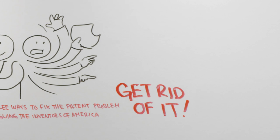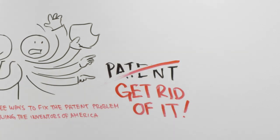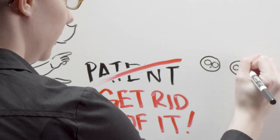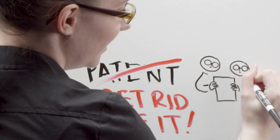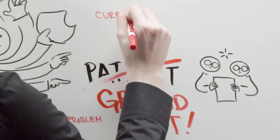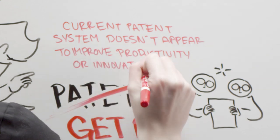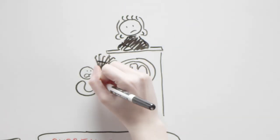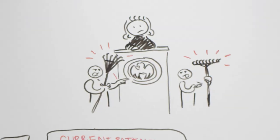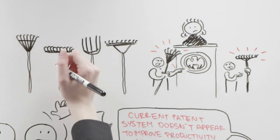Get rid of it. That's right, abolish the patent system, an idea recently published by two economists at the St. Louis Reserve. They argue the current patent system doesn't appear to improve productivity or innovation. All it does is lead to lawsuits and waste time and money. If patents simply disappeared, so would our current problem.